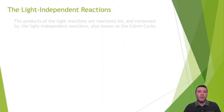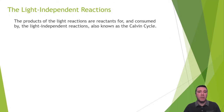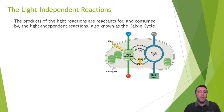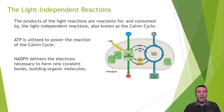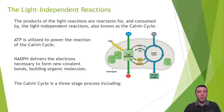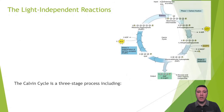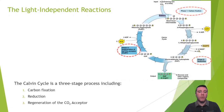The light-independent reactions, or Calvin cycle, take place in the stroma of the chloroplast. ATP from the light reactions provides the energy necessary to power the Calvin cycle, and NADPH delivers the electrons — originally from water — necessary for the formation of new covalent bonds to build organic molecules. The Calvin cycle is a three-stage process that includes carbon fixation, reduction, and regeneration of the CO2 acceptor.